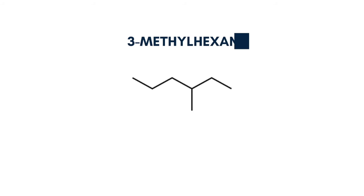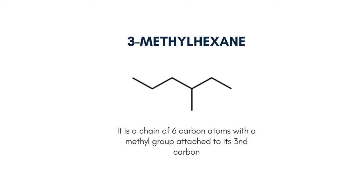The third one is 3-methylhexane, which is a chain of 6 carbon atoms with a methyl group attached to its third carbon. It is similar to the previous isomer, but here we place the methyl group on the third carbon.